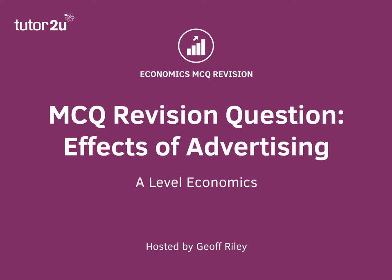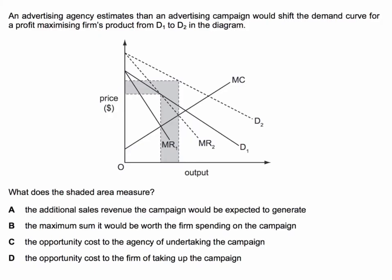Here's a question which looks at the economics of advertising using pretty standard economic theory that you will have come across in your A-level microeconomics. An advertising agency estimates that a campaign would shift the demand curve for a profit-maximising firm's product from D1 to D2 in the diagram.